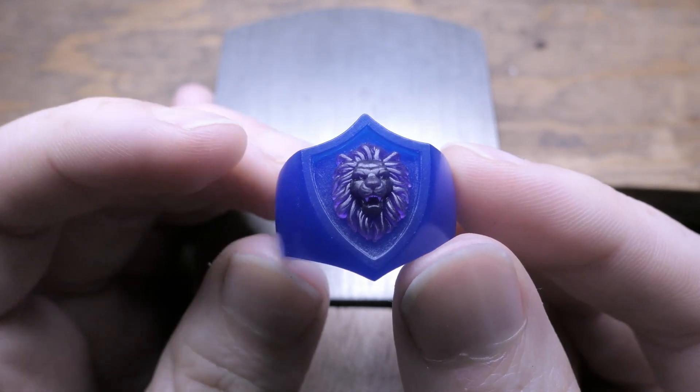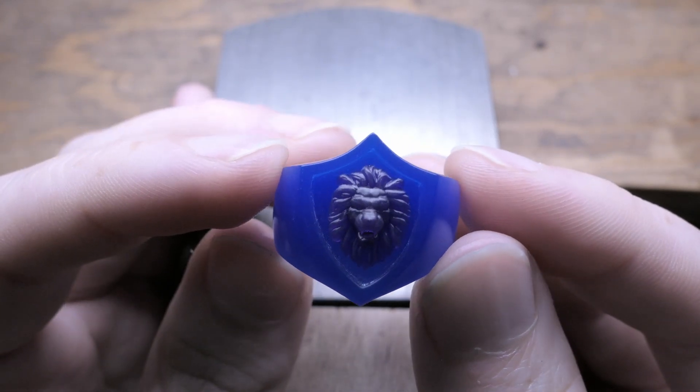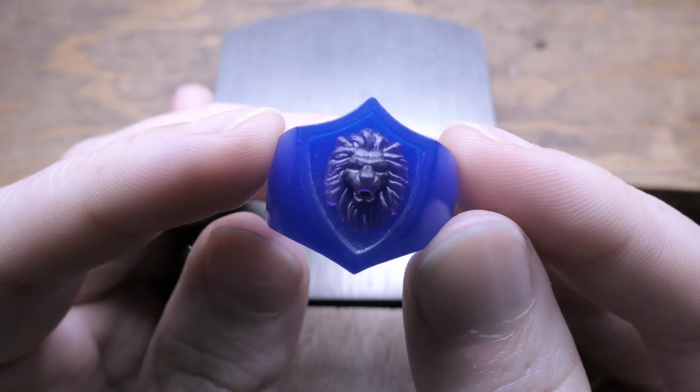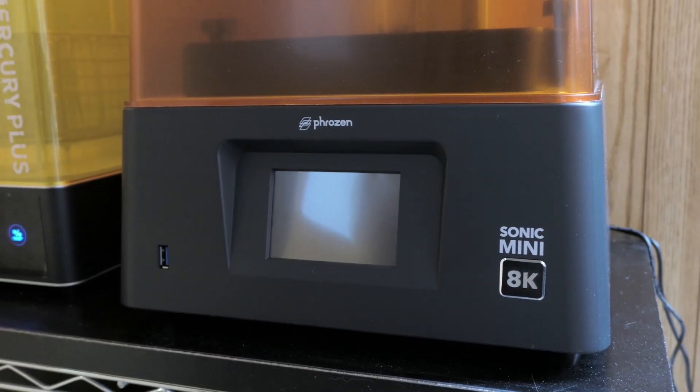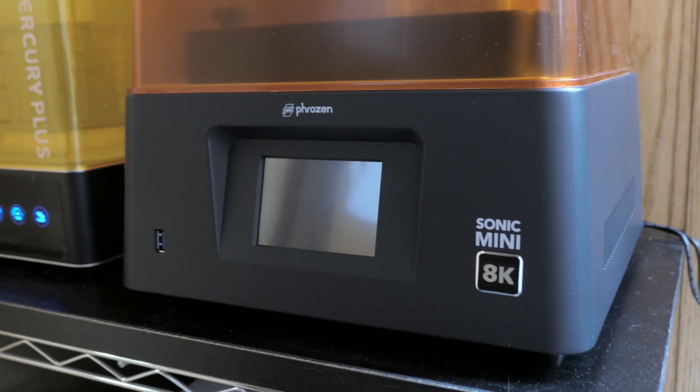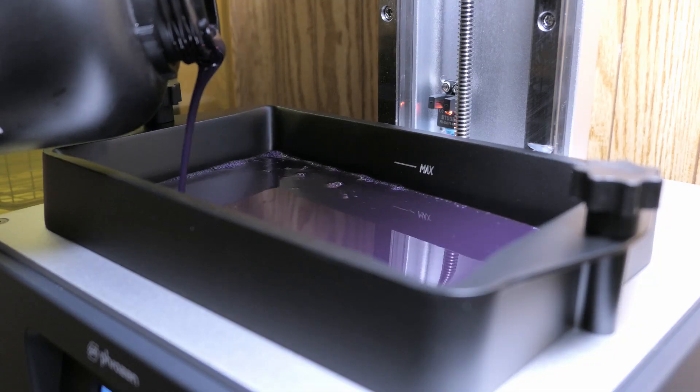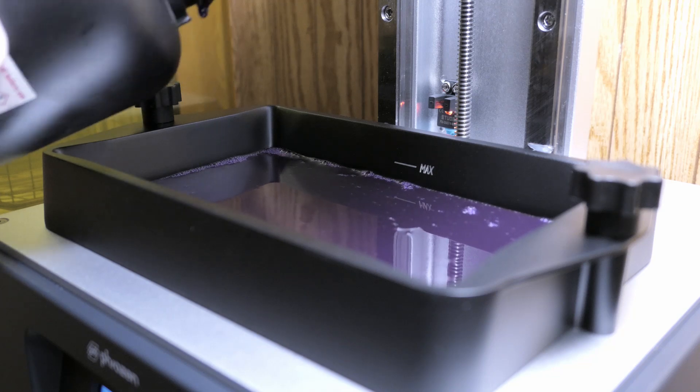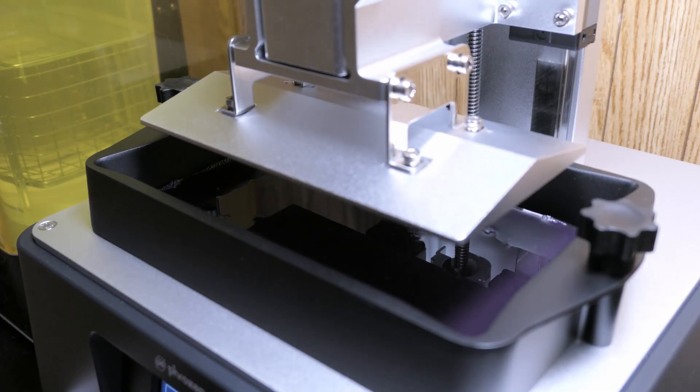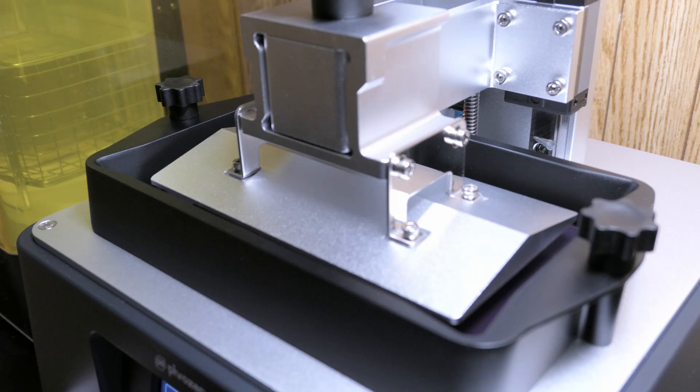And last time I showed the results of the test print of the Lion, and this was done using the Frozen Sonic Mini 8K with some castable resin. This was my first experience with using this printer, but I just wanted to give it a good field test to see what kind of detail I can get when casting.